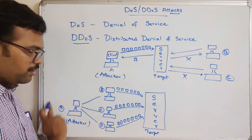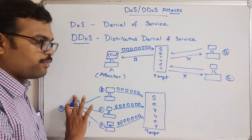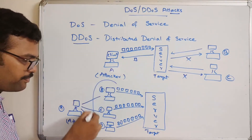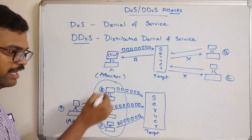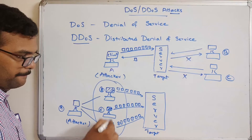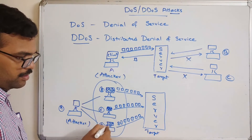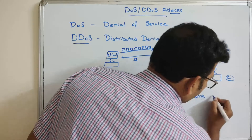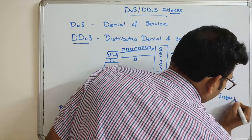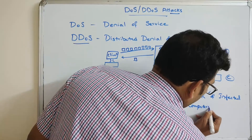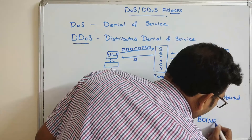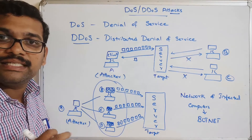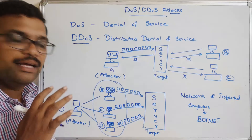A network of infected computers is called a botnet, and each infected system is called a bot. The attacker triggers an event so that all infected systems in the network start sending requests to the server. Obviously the server receives a flood of requests and can't respond to all of them — the server goes down and becomes inaccessible to legitimate users.